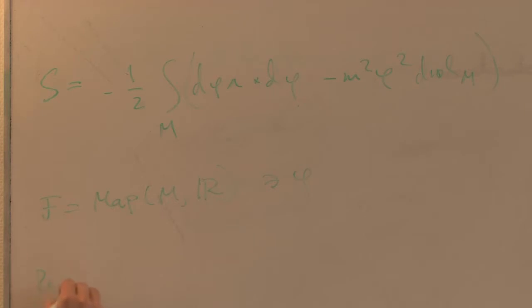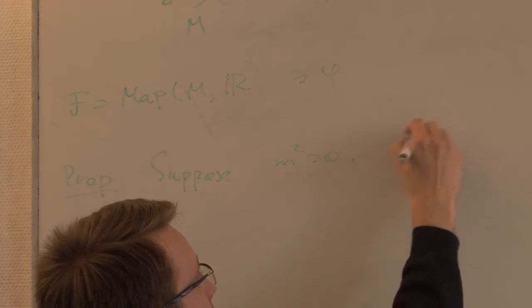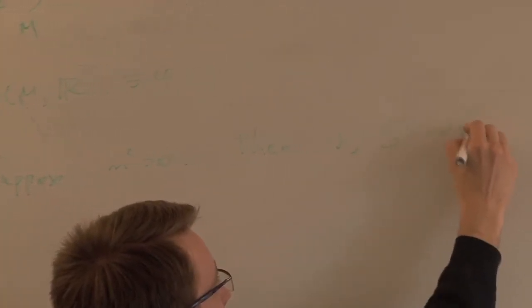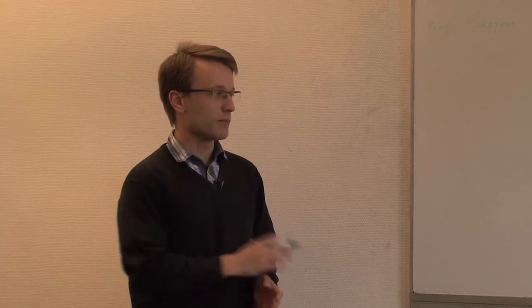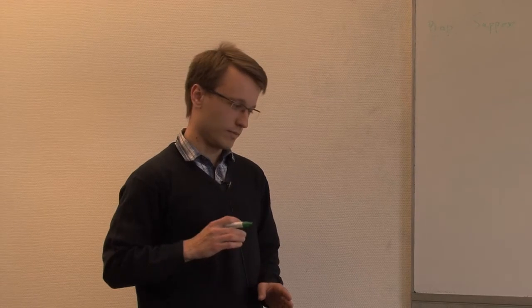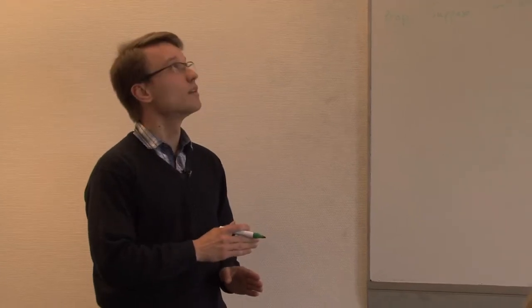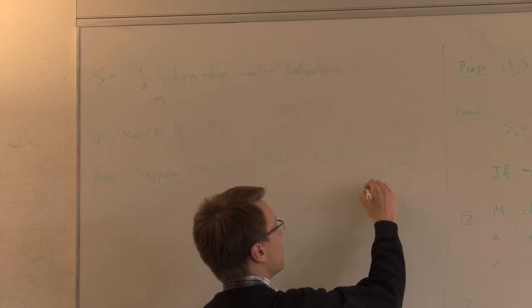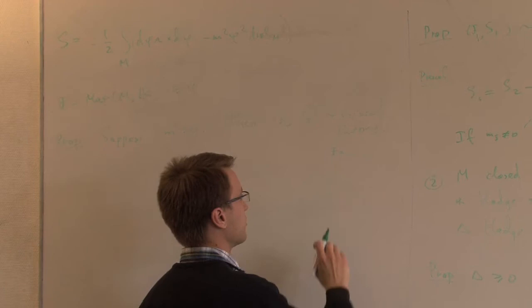The action for a free scalar field is minus one-half times the integral of d-phi wedge star d-phi, minus m-squared times phi-squared times the volume form. The space of fields is maps from M into R, and phi is the coordinate. The claim is: if the mass-squared is actually positive, then this theory is equivalent to the trivial theory — where the space of fields is a point and the action functional is just zero.